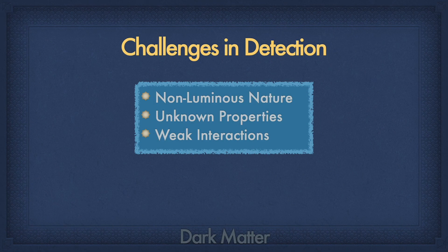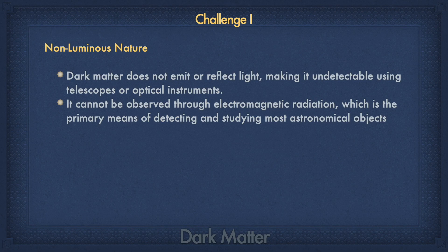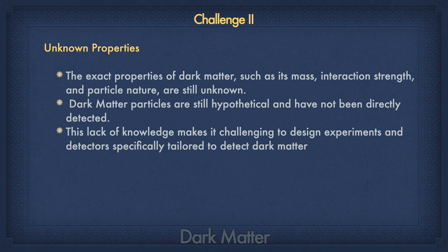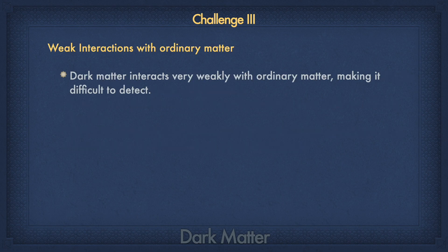Why is it so hard to detect dark matter in spite of it being 5 times more massive than visible matter? There are 3 main reasons. First, the non-luminous nature of dark matter: telescopes fail to detect it optically because it does not emit or reflect light. Second, its unknown properties: the properties of dark matter are not yet known to scientists — they are hypothetical, so the particle's mass, size and strength of interaction are unknown, making it challenging to design specifically tailored experiments. Third, its weakly interacting nature: dark matter does not interact with electromagnetic radiation, making it difficult to detect.